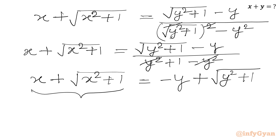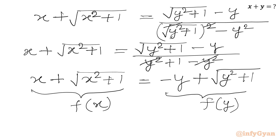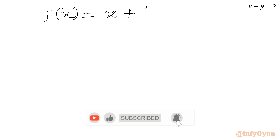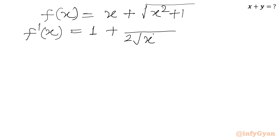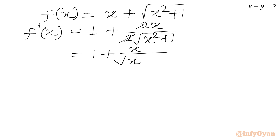Let us say LHS is f(x) and RHS is f(y). I will calculate f prime of x, the first derivative. f(x) equals x plus square root of (x squared plus 1), so f prime(x) equals 1 plus the derivative of square root of (x squared plus 1), which gives 1 plus x over square root of (x squared plus 1).